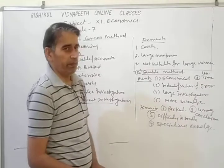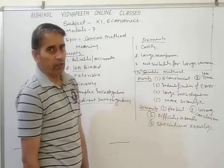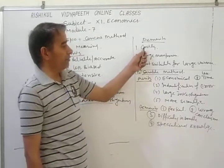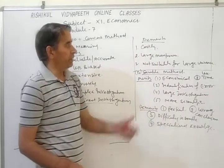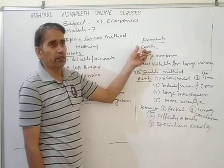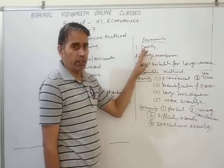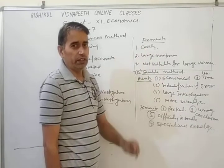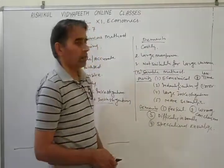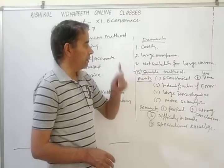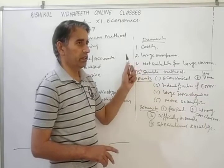These are some merits of the census method, but this method also contains some demerits. Number one is costly. This method is costly because we count each and every item, which takes more money and more time to collect information. So more time and more money is required to collect information under this method, making it an expensive or costly method.